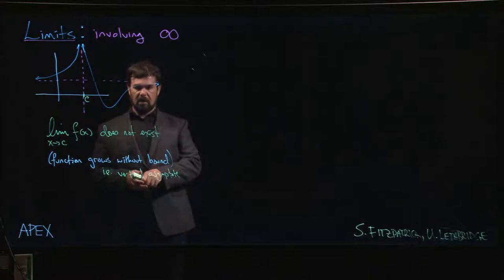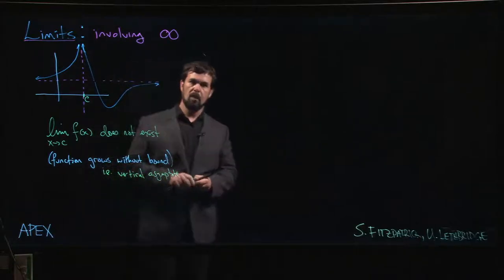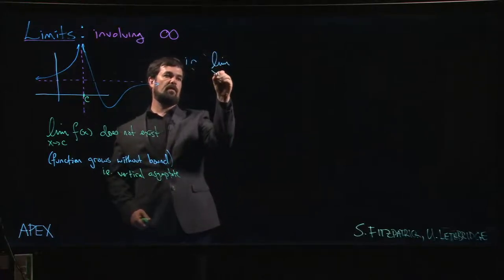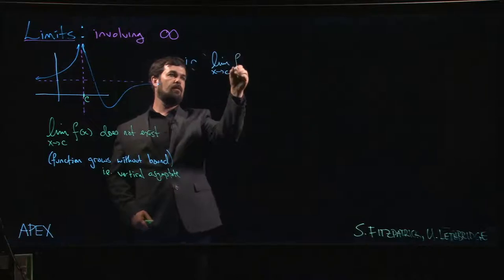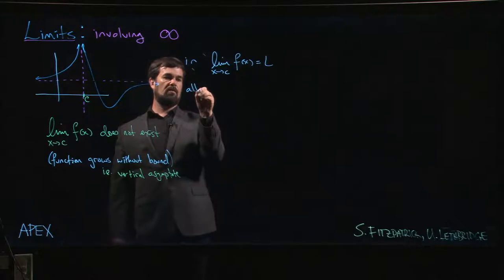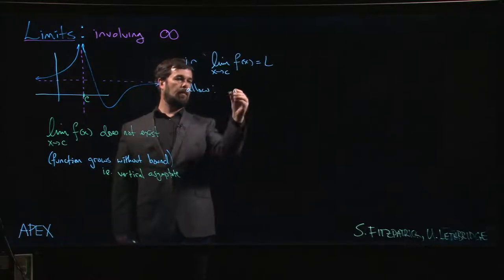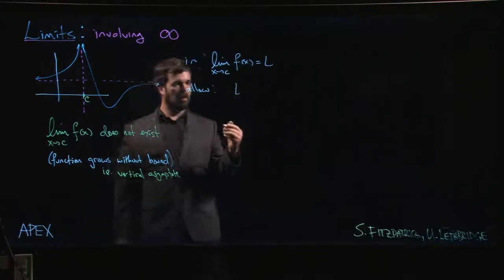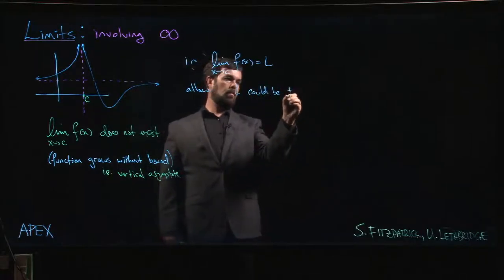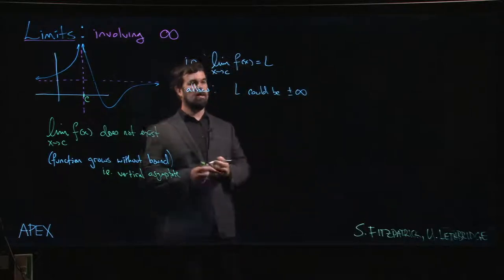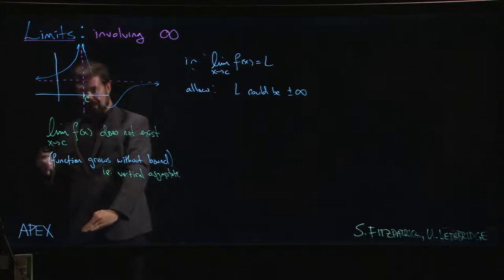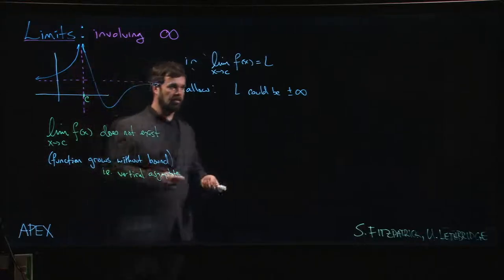What we do is we take this original expression for the limits, limit x approaching c of f of x equals l. We're going to allow for the possibility that l might be plus or minus infinity. Our function could be getting very large and positive but also very large and negative, which would be the minus infinity result.